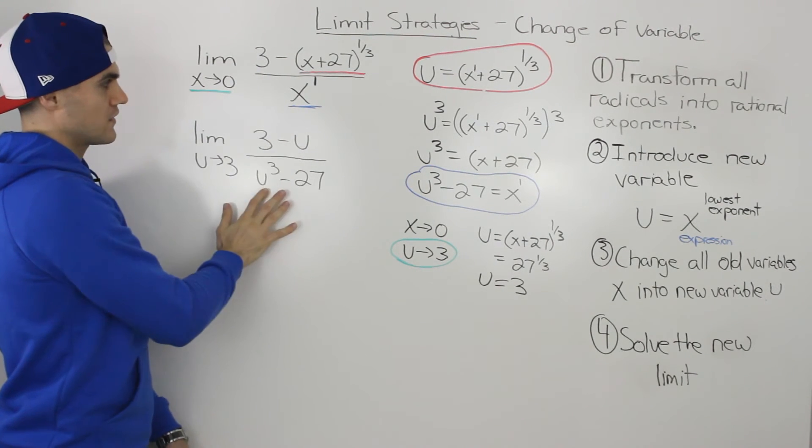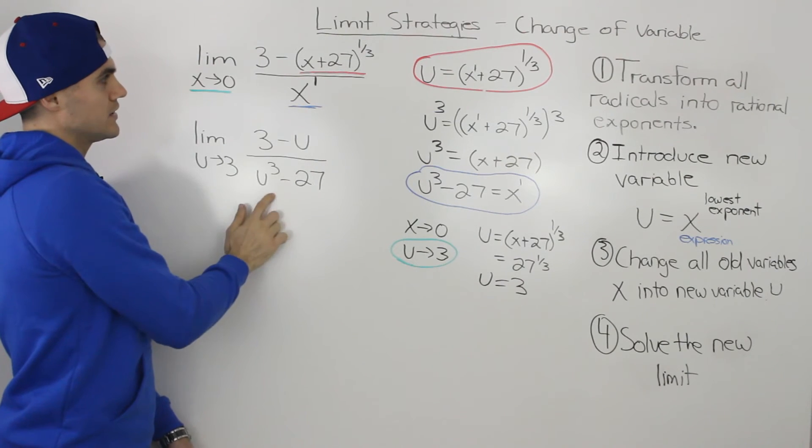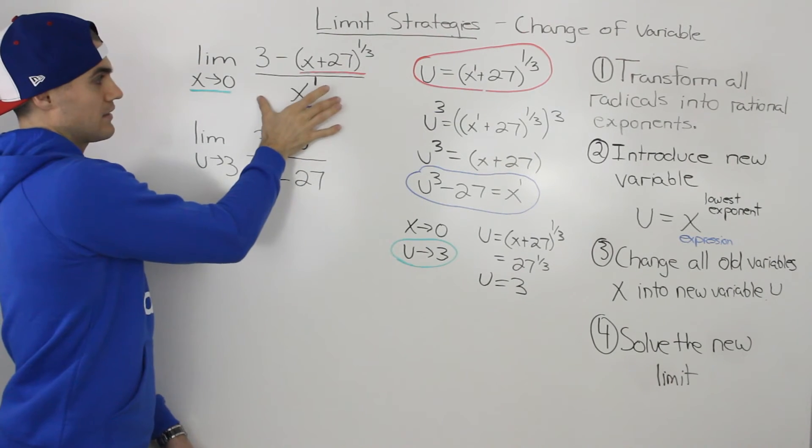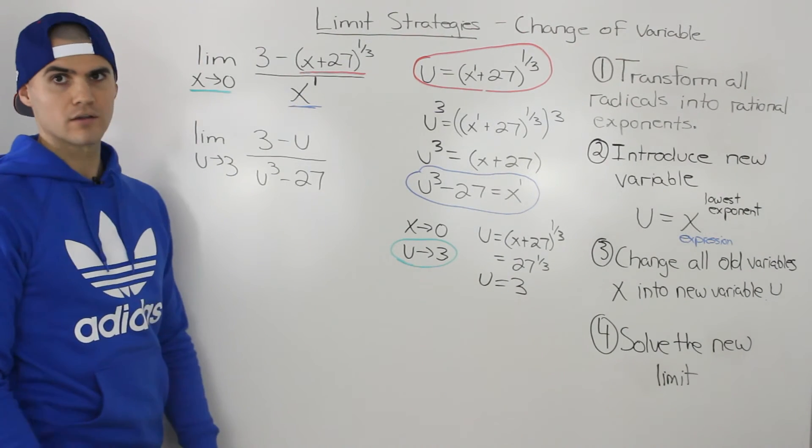Making all those substitutions, we get the limit as u approaches 3 of (3 minus u) all over (u³ minus 27). We now have a brand new limit entirely in terms of u with no x variables, and it's much nicer to work with than the original limit.